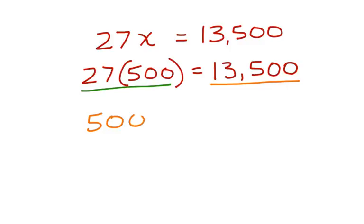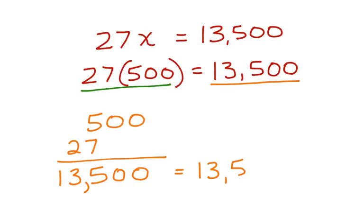Let's multiply 500 times 27. 7 times 5 is 35. We're going to carry 3. 5 times 2 is 10 plus 3 is 13. And we've got these two zeros to come down into our product. 13,500 is equal to 13,500.